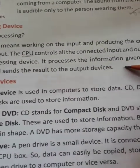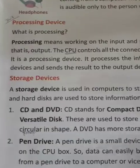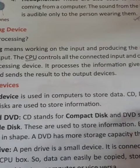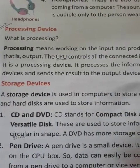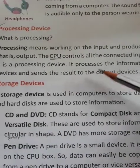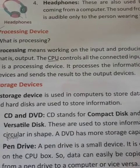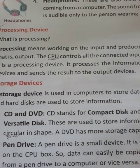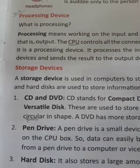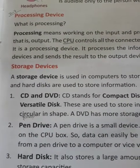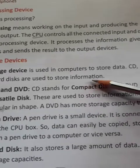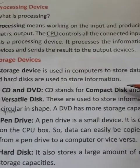It processes the information given by the input devices and sends the results to the output devices. Next we have storage devices. The example of a processing device is CPU.